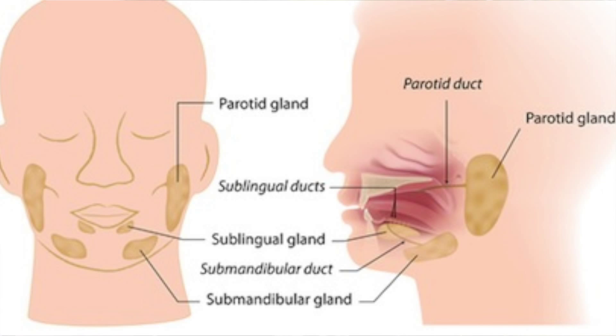They are the parotid salivary glands, which are just in front of the earlobe. We have the submandibular glands, which are underneath the mandible over here, and then we have the sublingual glands, which are quite small.